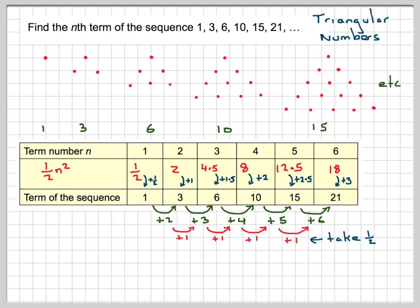The sequence a half, 1, 1.5, 2, 2.5, and 3 is also a sequence. It's a linear sequence, all it is is just a half of n.